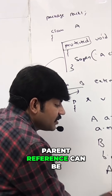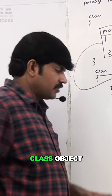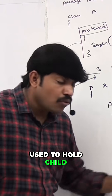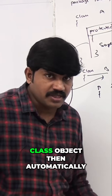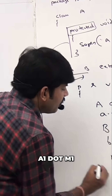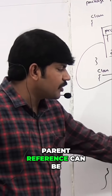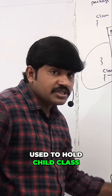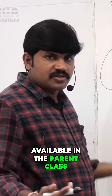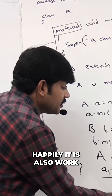Parent reference can be used to hold a child class object. Using that, you can call the method available in the parent class — A1 dot M1 — no problem at all, it also works happily.